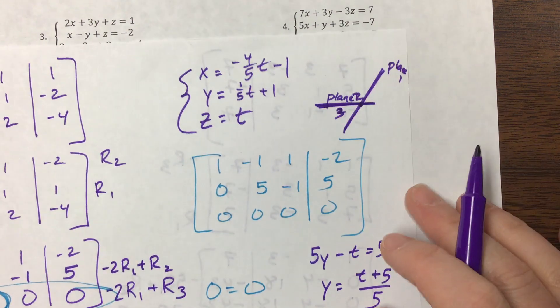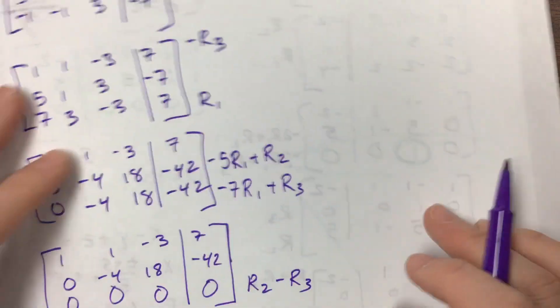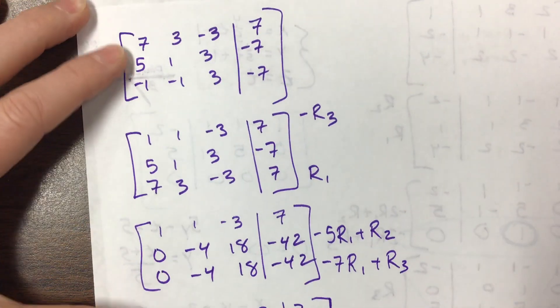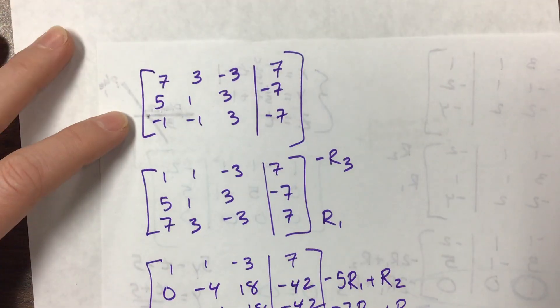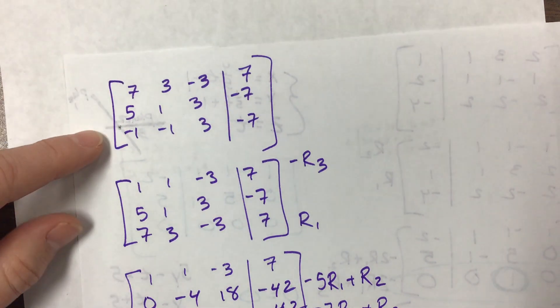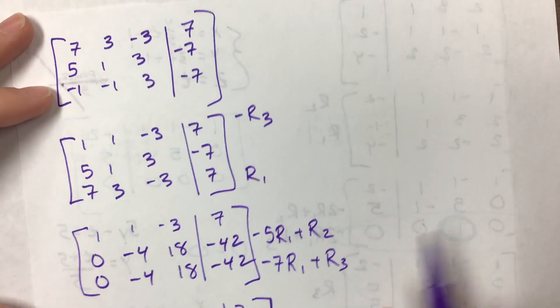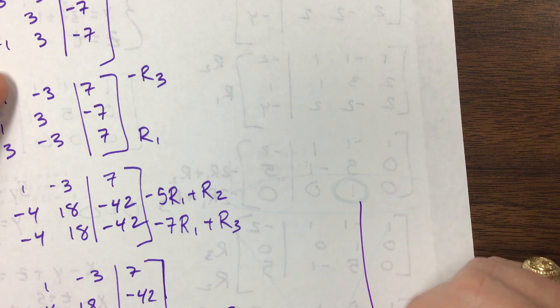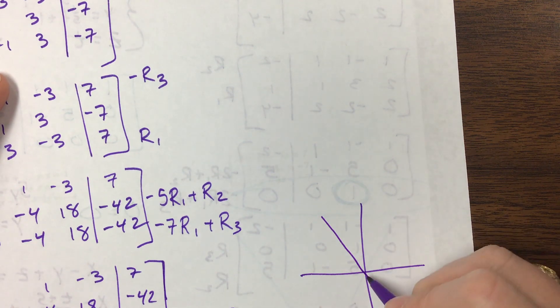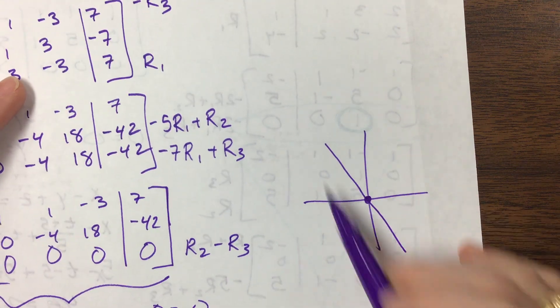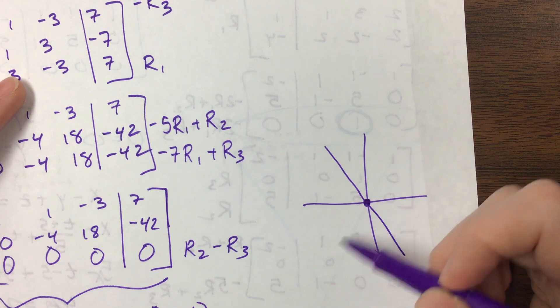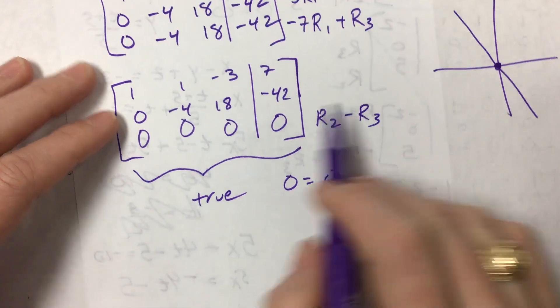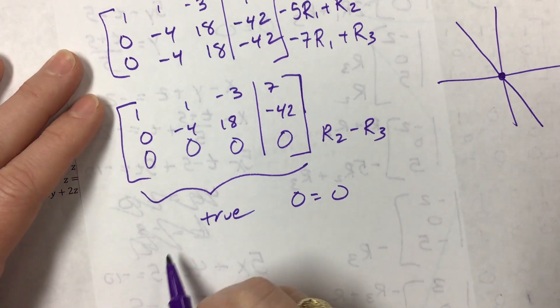This one on number four - we knew that our planes weren't... my brain just stopped. Our planes are not parallel and they intersect. We get a true statement - they intersect at a line. So basically what I have is something like a side view of something like this, where I've got a plane, another plane, and another plane, and they all intersect with this line that goes through the middle of them. So if I'm going to write the equation of it, okay, well let's see - this could be rewritten as 1, 1, -3, 7, and I could divide by...